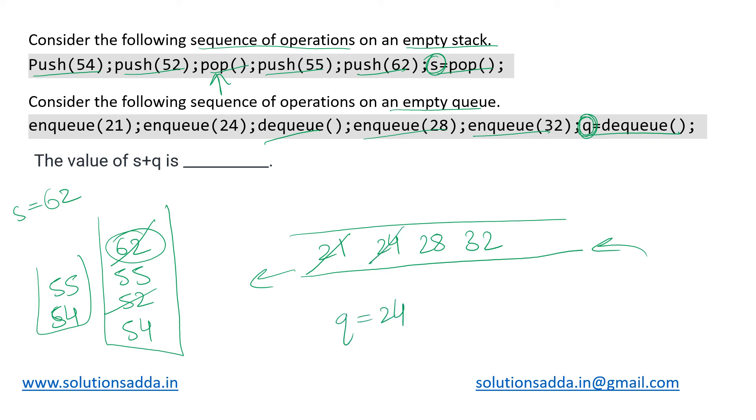And our resulting queue will just have elements 28 and 32. So now the variable s is holding value 62 and variable q is holding the value 24. We have been asked the value of s plus q, so that would simply be 62 plus 24 which is 86. So the answer for this question is simply 86.